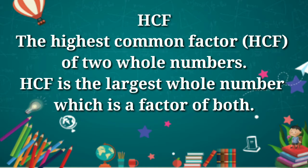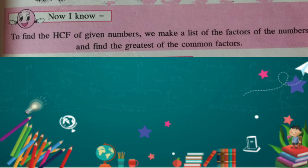Largest means bada. To find the HCF of given numbers, we make a list of the factors of the numbers and find the greatest of the common factor. So, let's see example.